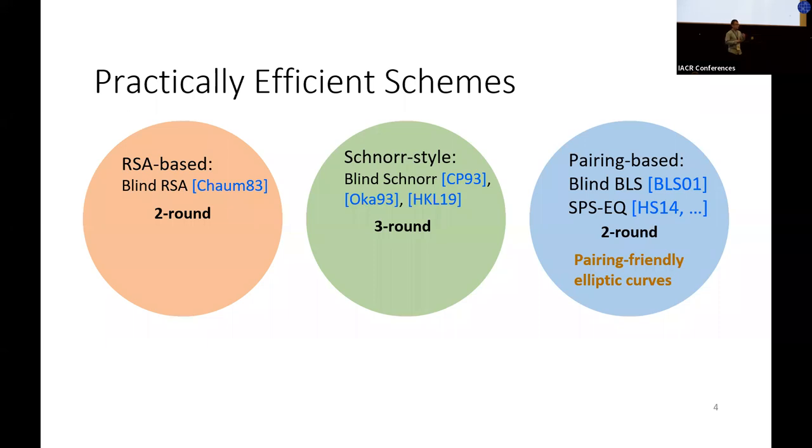On the other side, RSA blind signatures inherit all undesirable properties of RSA like large key sizes. Therefore, many applications might prefer using Schnorr-style schemes despite their higher round complexity, in particular because they are simple to implement, allow efficient verification, and can be based on any standard elliptic curves.